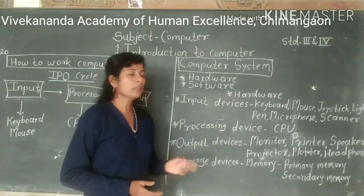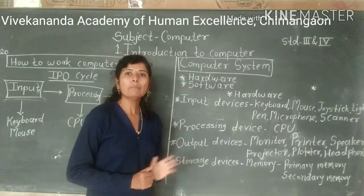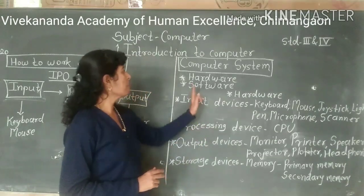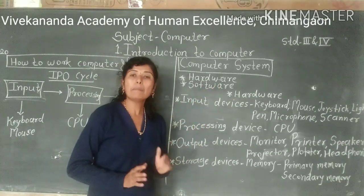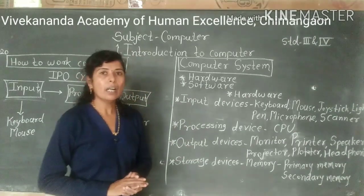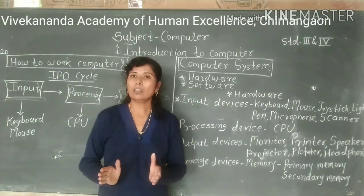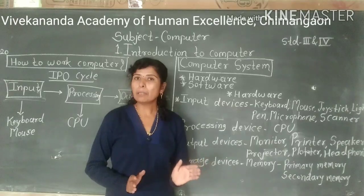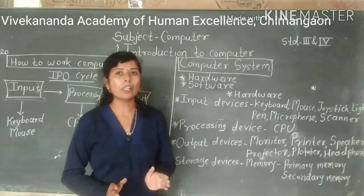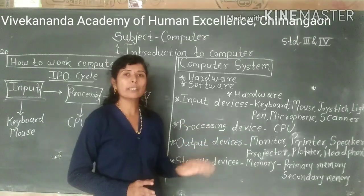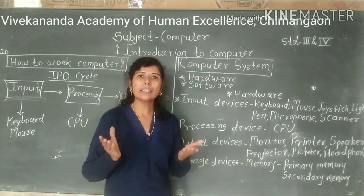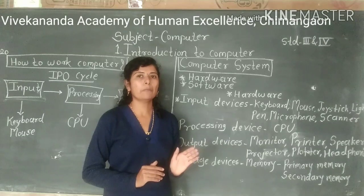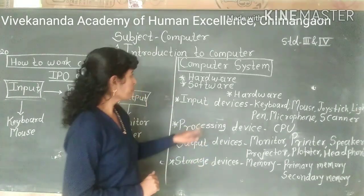After that we learn about our second point — computer system. A computer system has some parts. There are two main parts: hardware and software. Hardware means all the touchable parts of the computer. Which parts you can see and touch are called hardware, including parts connected to the computer and the CPU inside.